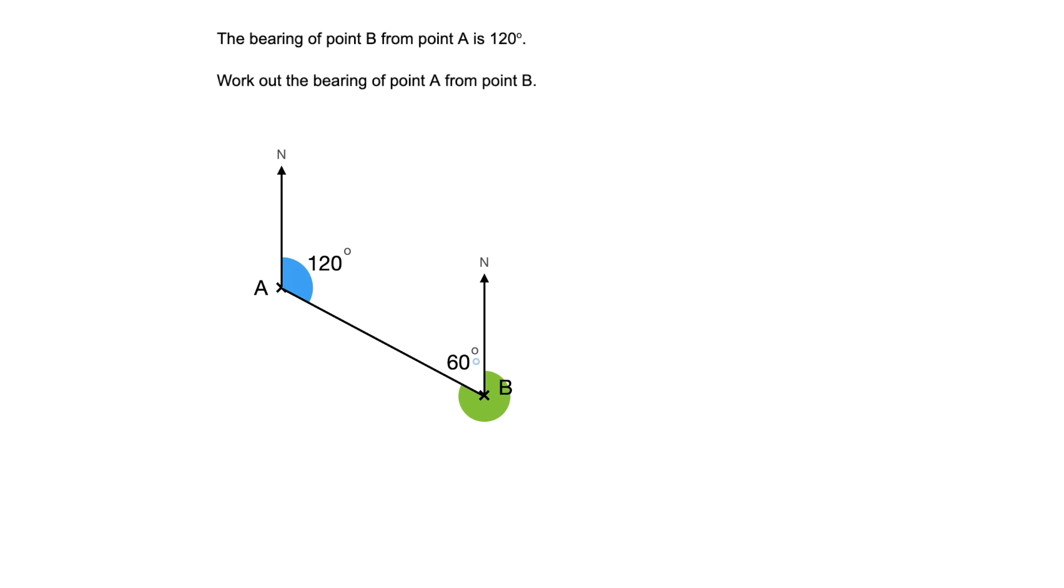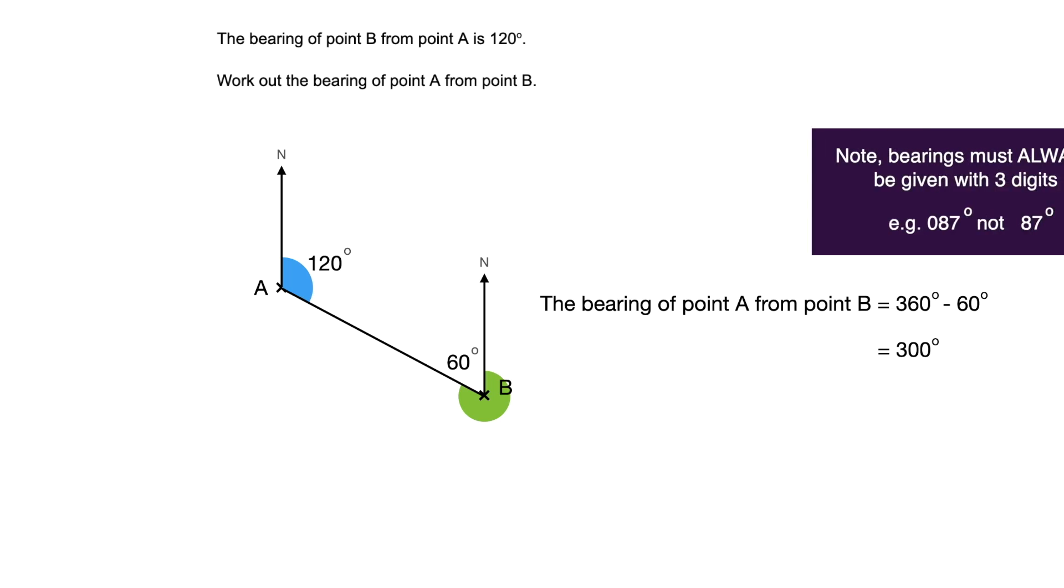And at this point here, point B, we have a full circle. We already know this angle here. So we can calculate the bearing, this angle here. So the bearing of point A from point B is equal to 360 degrees minus this angle here, this 60 degrees. And therefore that is equal to 300 degrees.